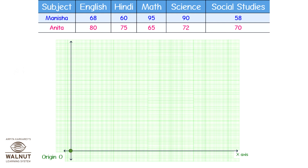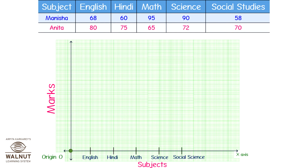We draw the x-axis, y-axis and mark the origin. The marks go on the y-axis, and the subject names go on the x-axis. Now we take suitable distances and mark five points on the x-axis for the five subjects: English, Hindi, Math, Science, and Social Science. Now comes the most important task of drawing a graph.